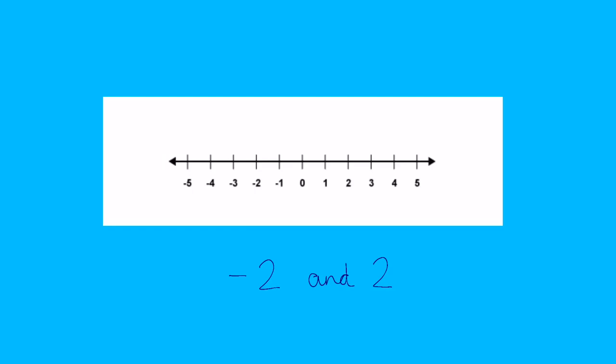What about minus 2 and 2? What's the difference between those numbers? Well, let's find 2 on the number line and minus 2. Now, I know that from 0 to 2, that's going to be 2, and 0 to minus 2, that's going to be 2. So altogether, it's 4 spaces. Let's check. 1, 2, 3, 4. So the difference between minus 2 and 2 is 4.